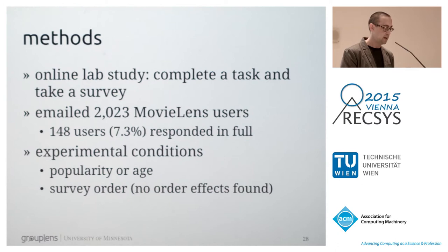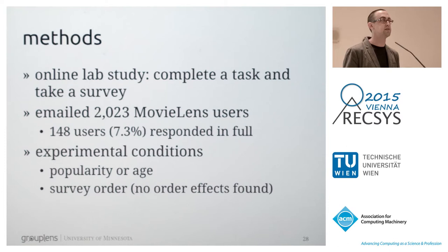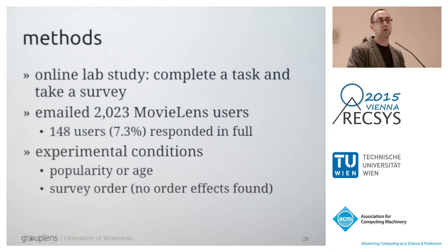To study our system, we employed an online lab study built on the MovieLens system. The basic structure: complete a task using our recommender interface, then answer questions about your original list, your adjusted list, and the quality of the interface itself. To recruit participants, we emailed users who had logged in during the previous six months, rated at least 15 things, and consented to participate in MovieLens experiments. Subjects were randomly assigned to either a popularity control or an age control, though we blinded them to the nature of these controls.